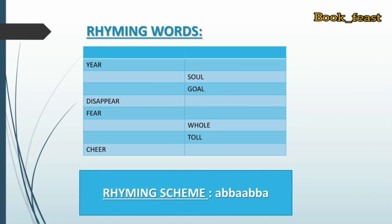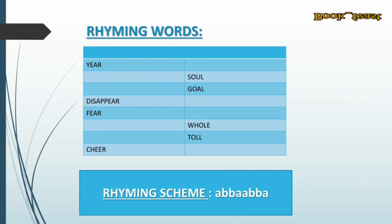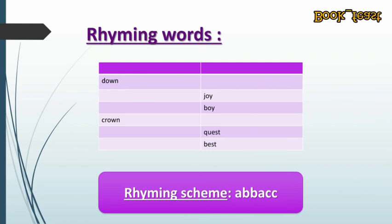There are two sets of rhyming patterns. The first set — year, disappear, fear, cheer — is group A; and soul, goal, wall, toll — is group B. Calculating the rhyme scheme gives you A, B, B, A, A, B, B, A for the octave. In the sestet, the words are: down, crown, joy, boy, quest, best. The rhyme scheme there is A, B, B, A, C, C.